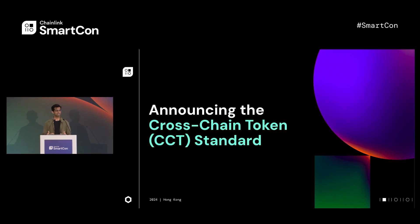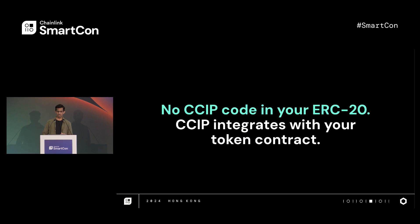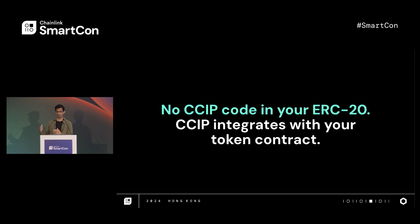With all these improvements to CCIP tokens, we thought we'd take the opportunity to wrap all of this into a single standard, which we now call cross-chain tokens. With this cross-chain token standard, developers are not required to pull CCIP code directly into their token contract, such as their ERC-20. Cross-chain tokens are a standard that allows token developers to make their new or existing tokens cross-chain compatible by enabling it with CCIP. The standard itself includes auxiliary smart contracts, such as the CCIP token pools, that allow token developers to enable that cross-chain functionality.